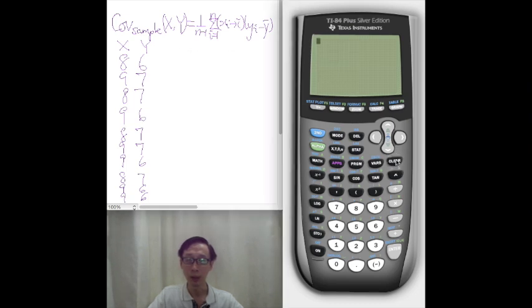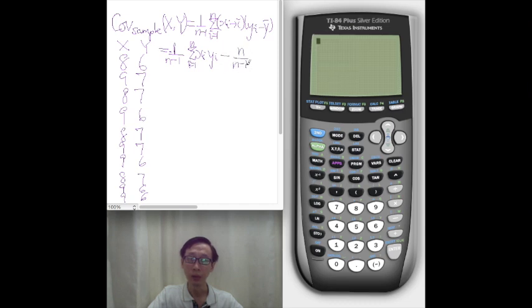Just like the population covariance of x and y calculation, we're going to make use of a calculator-friendly expansion, and that is 1 over n minus 1 times the sum products of x_i y_i minus n over n minus 1 times x bar y bar.